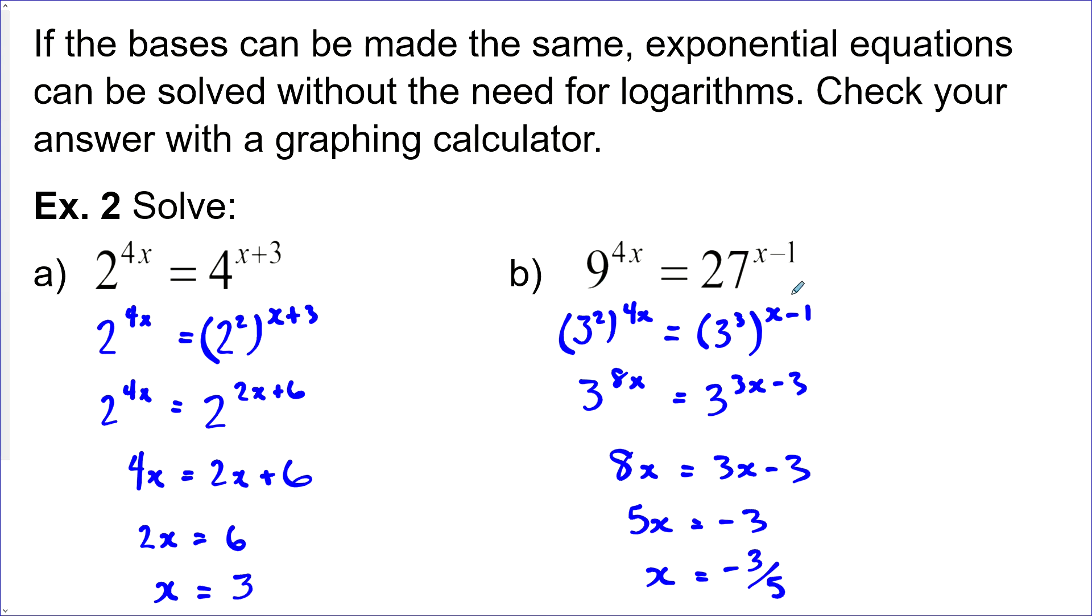Let's do this one a different way, just so you can see what I'm talking about. On this side, 9 to the power of 4x is what we're going to leave it at. We're going to try to make 27 have a base of 9. So if we had 9 and we took the square root of it, that would give us 3. And then if we cubed 3, we'd get 27. So 27 actually could be written 9 to the power of 3 over 2. So that's possible. Then we can multiply these in here. So we got 9 to the power of 4x equals 9 to the power of 3 over 2x minus 3 over 2. Now we can drop the base because they're the same. So we get 4x is equal to 3 over 2x minus 3 over 2.